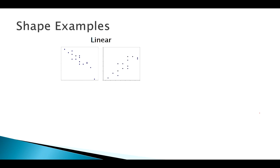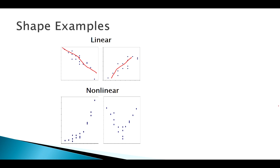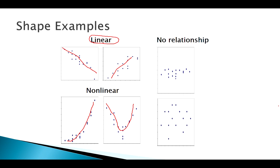Shape-wise, a linear shape means you could draw a straight line through the points. A nonlinear shape is everything else — maybe exponential or curved. Nonlinear shapes require much more complicated methods, so for now we're focusing on linear. Sometimes it's just as interesting to find no relationship. A scattershot graph with no pattern obviously shows no relationship.